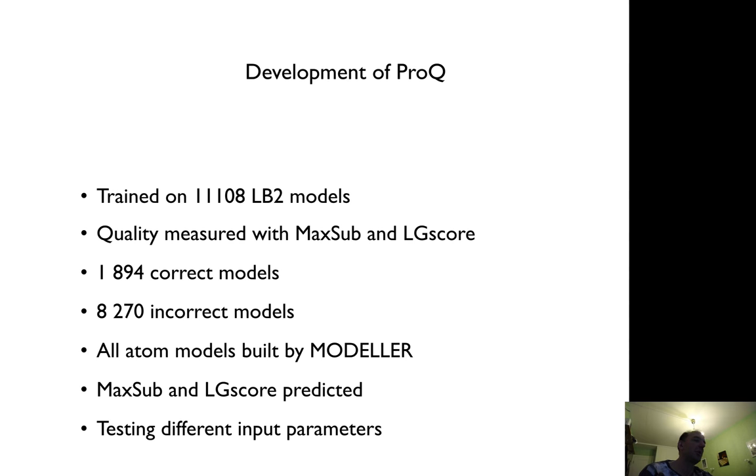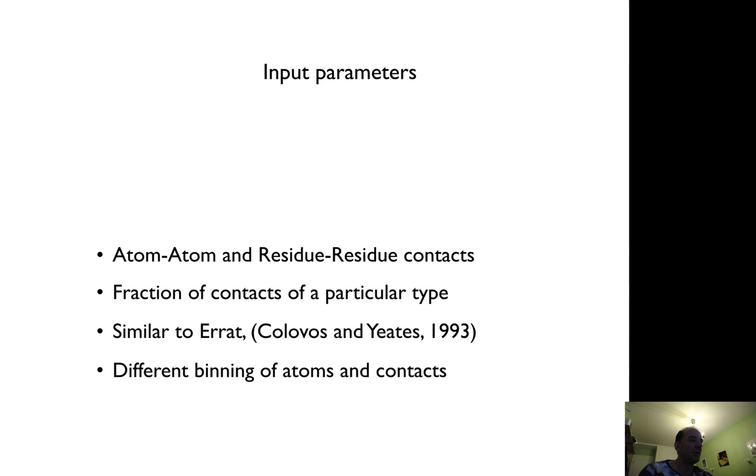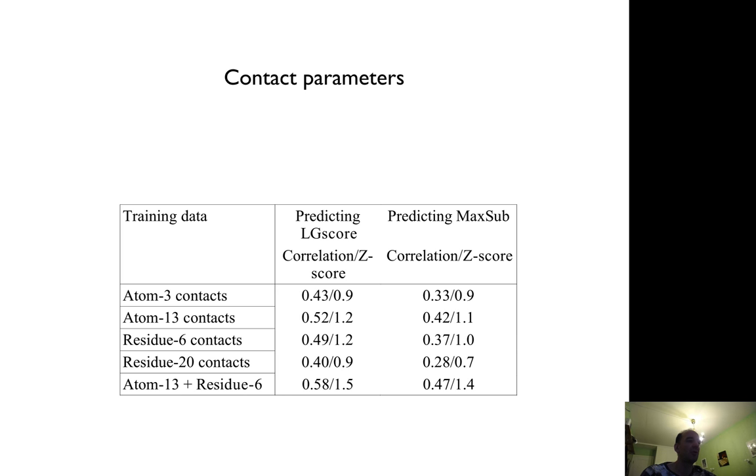We tested different input parameters. We took all the contacts together within a window and calculated what fraction of contacts of a certain type, with different binning of atoms or contacts. For instance, we found that if we only used three types of atom contacts, we had a correlation of 0.43 for the LGA score, but if you increased to 13 types of atoms, then 0.52 was better.